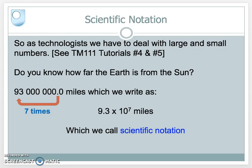I can represent this large number in a much shorter format as 9.3 times 10 to the power of 7, where 7 is the number of times we move that decimal point to the left. We leave the decimal point between the leading digit and the next set of decimal places, and we call this scientific notation.